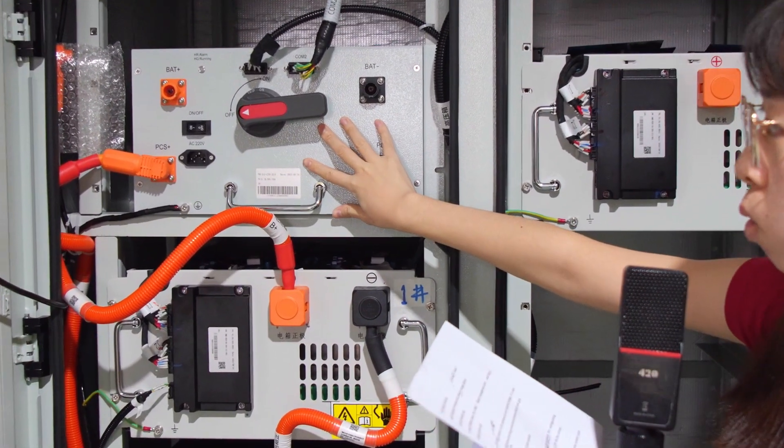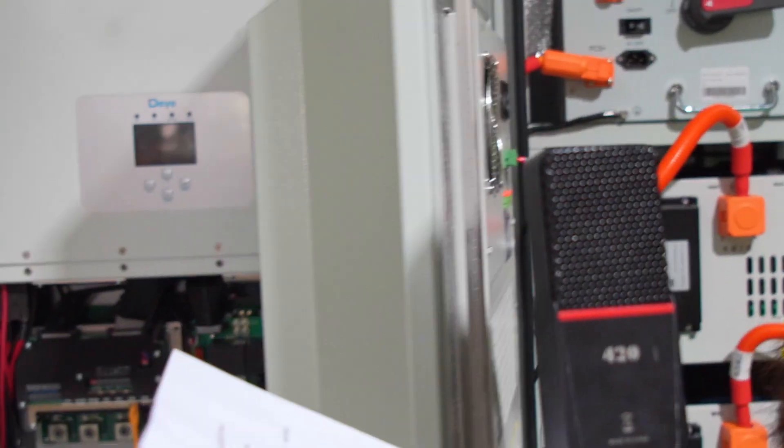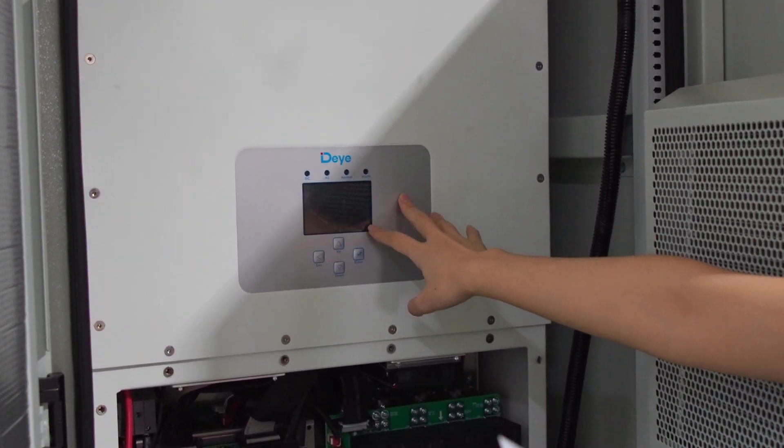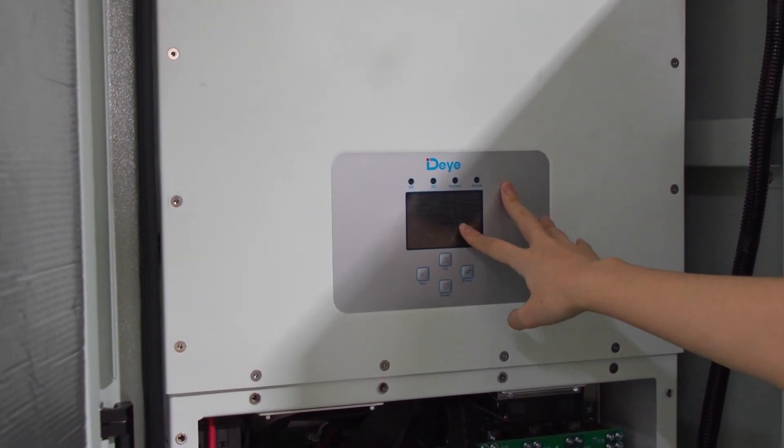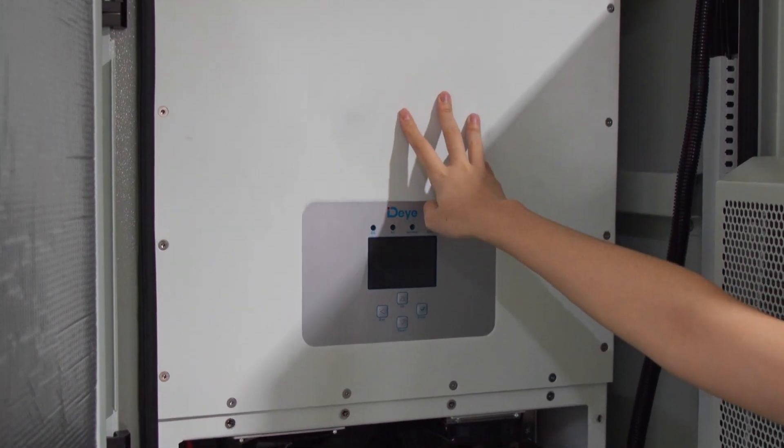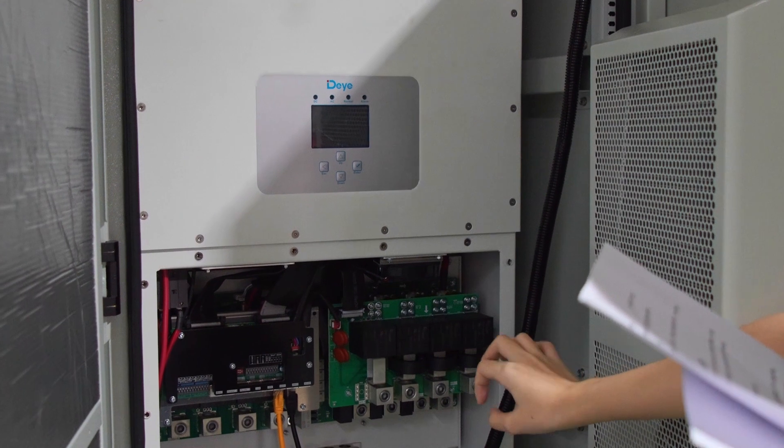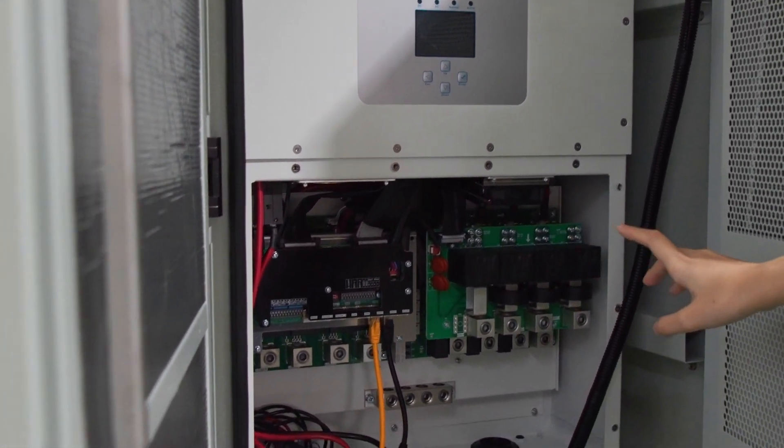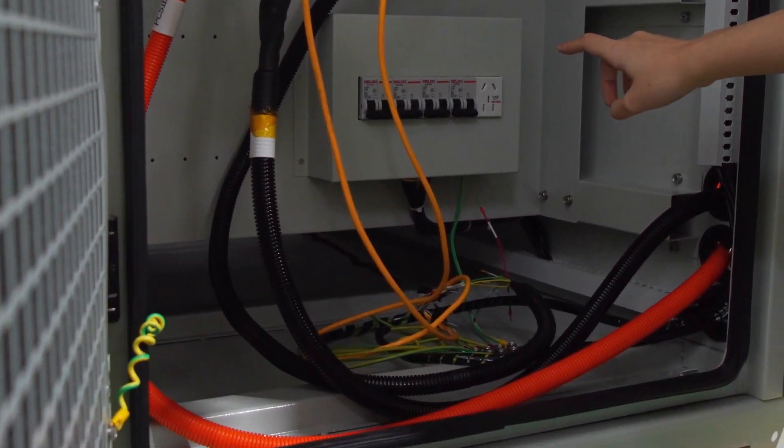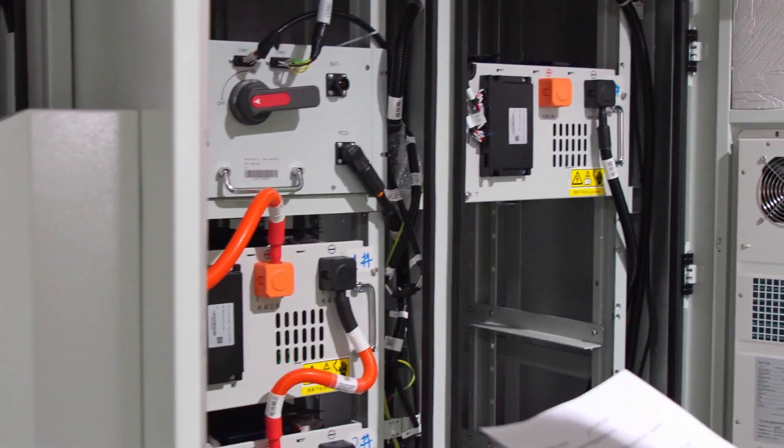This is the 50 kilowatt inverter for commercial and industrial storage. It's also called PCS to achieve bidirectional energy conversion between battery and grid. Circuit breakers for the whole system ensure safety.